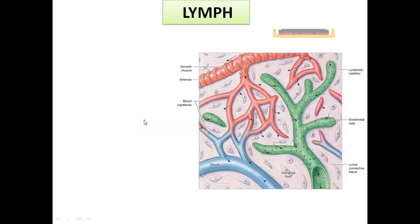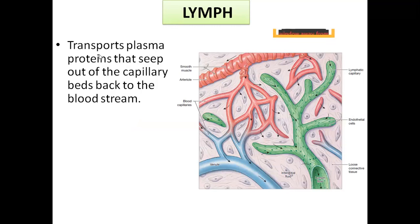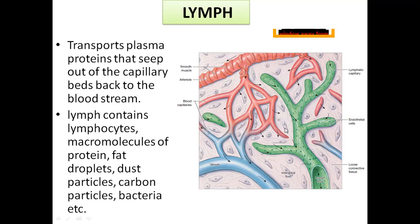Again, we see the arterial end and venous end of the capillaries. The work which is undone by the venous end of capillaries is now taken over by the lymphatic capillary. Lymph transports plasma proteins that seep out of capillary beds back to the bloodstream. The fluid in the lymphatic capillaries contains lymphocytes, macromolecules of protein, fat droplets — intestinal chyle — dust particles, carbon particles, and also bacteria.